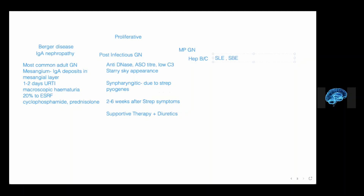SBE stands for subacute bacterial endocarditis. In terms of bacterial endocarditis, the typical peripheral stigmata are Janeway lesions and Roth spots. In today's context, tricuspid regurgitation most commonly due to IV drug use is associated with acute bacterial endocarditis caused by Staph aureus. The peripheral stigmata — Janeway lesions, Roth spots, Osler's nodes — are actually seen in left-sided subacute bacterial endocarditis rather than right-sided acute endocarditis.